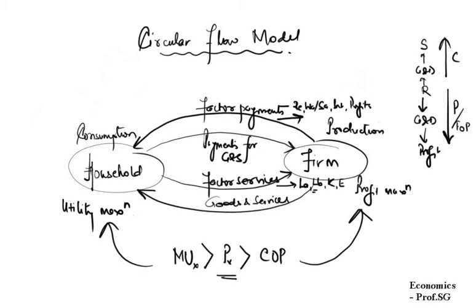In the previous video we saw the real and monetary circular flow within an economy. We saw how the two entities — households and firms — interact within an economic system. We found that households are the primary suppliers of factor services to firms. So the household, playing the primary role of a consumer, was also the provider of factor services to the firm, and in that case the firm initially acts as a consumer of factor services.